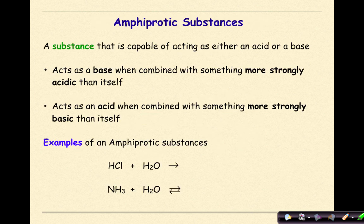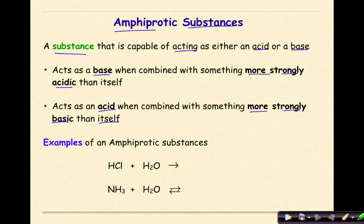What do we mean when we talk about an amphiprotic substance? This is a substance that is capable of acting as either an acid or a base. It will act as a base when combining with something more strongly acidic than itself. It will act as an acid and donate a hydrogen ion when combining with something more strongly basic than itself. Here's an example — specifically, we're going to look at the behavior of water.